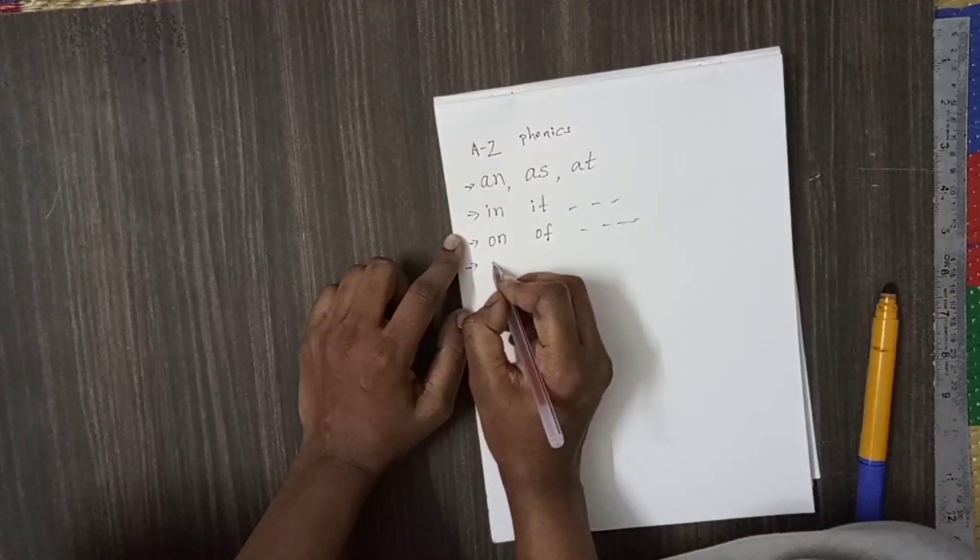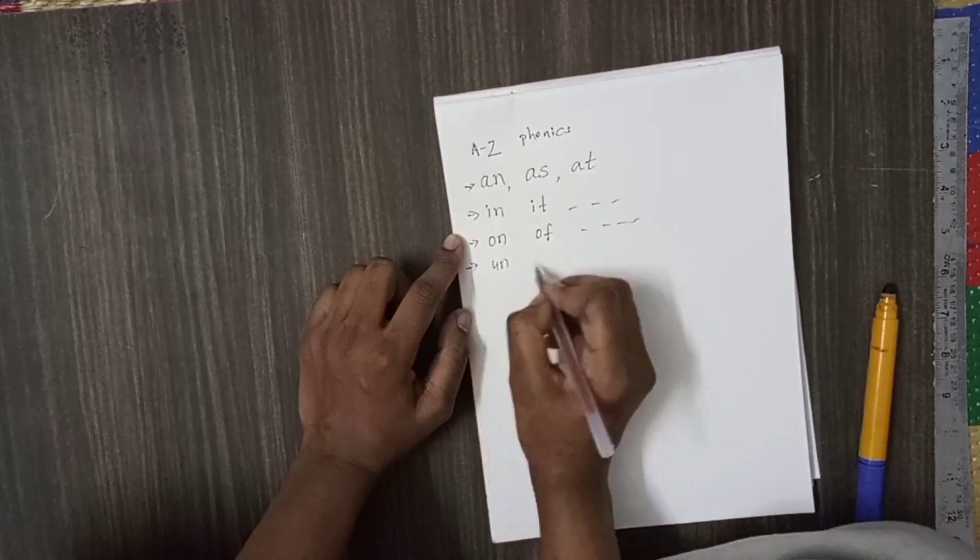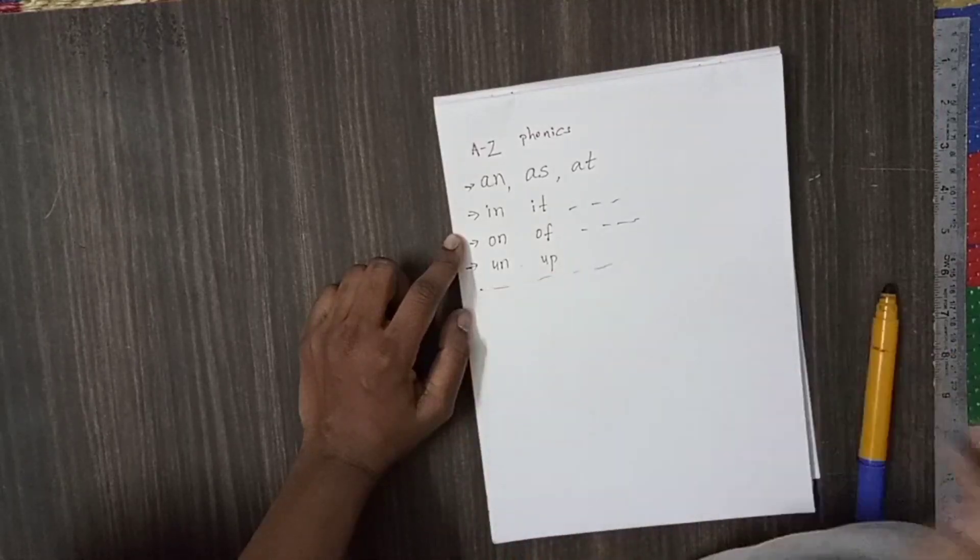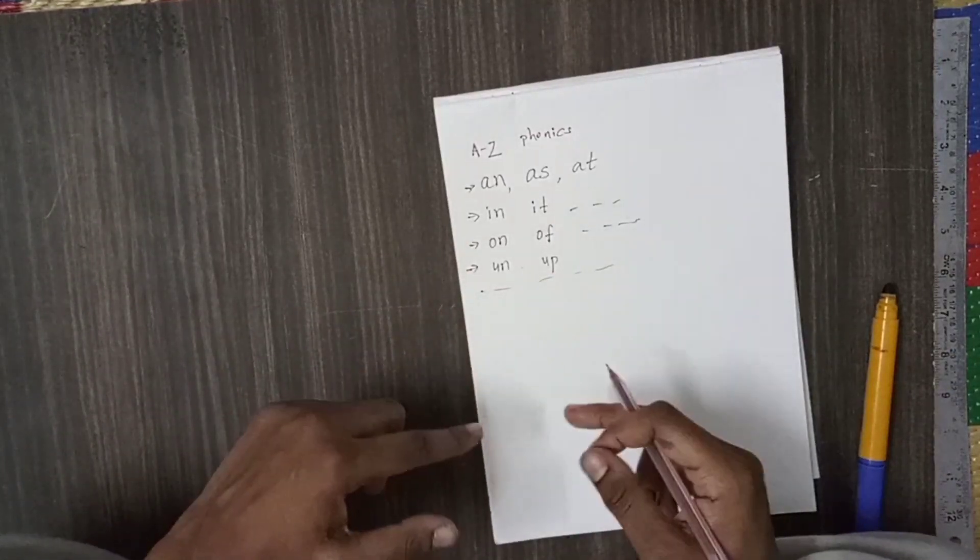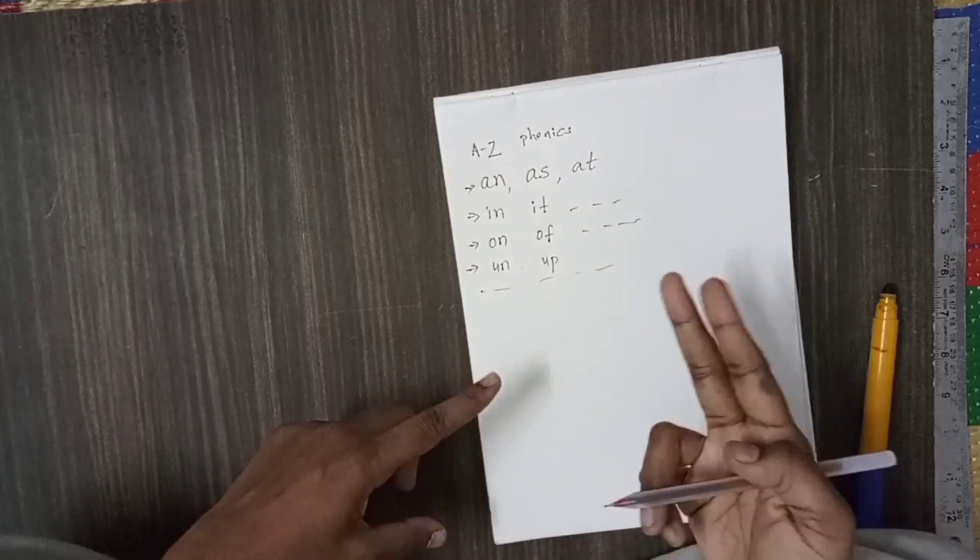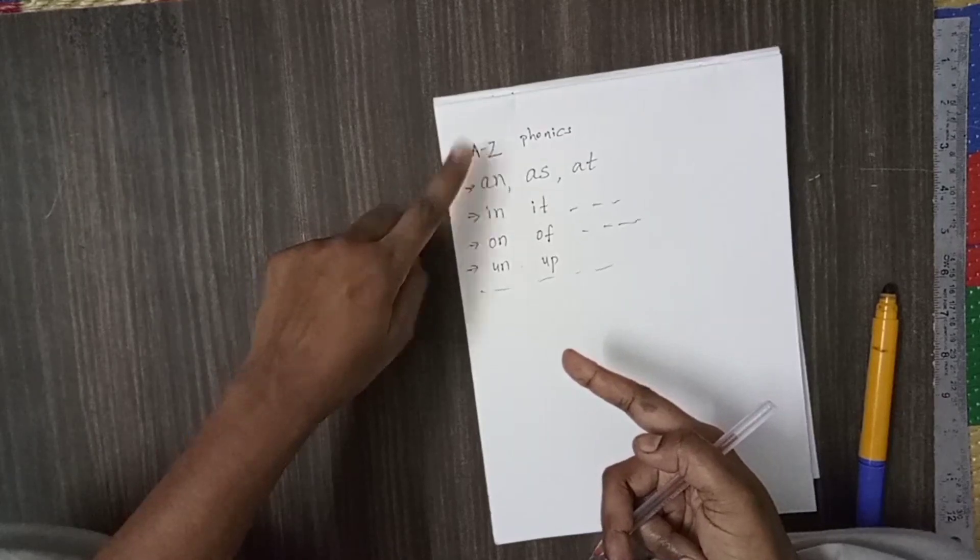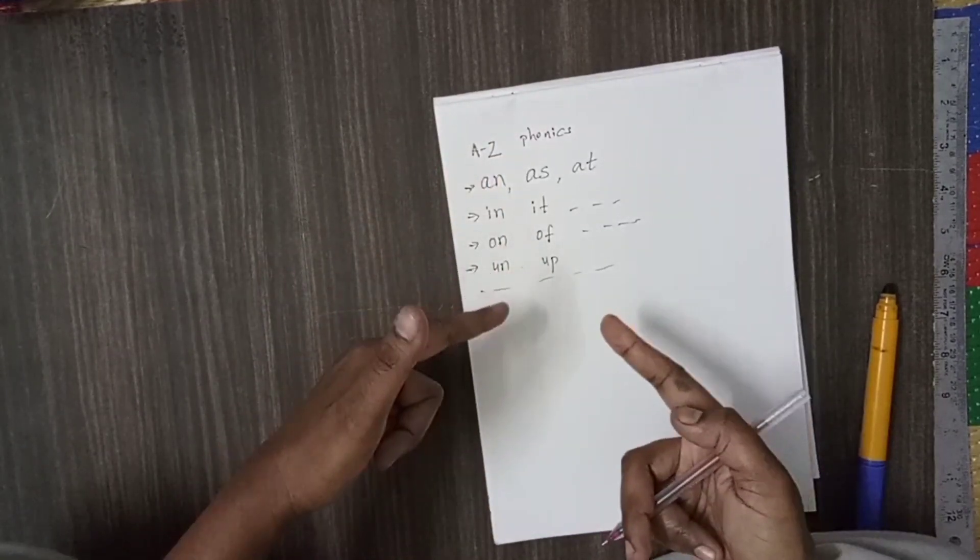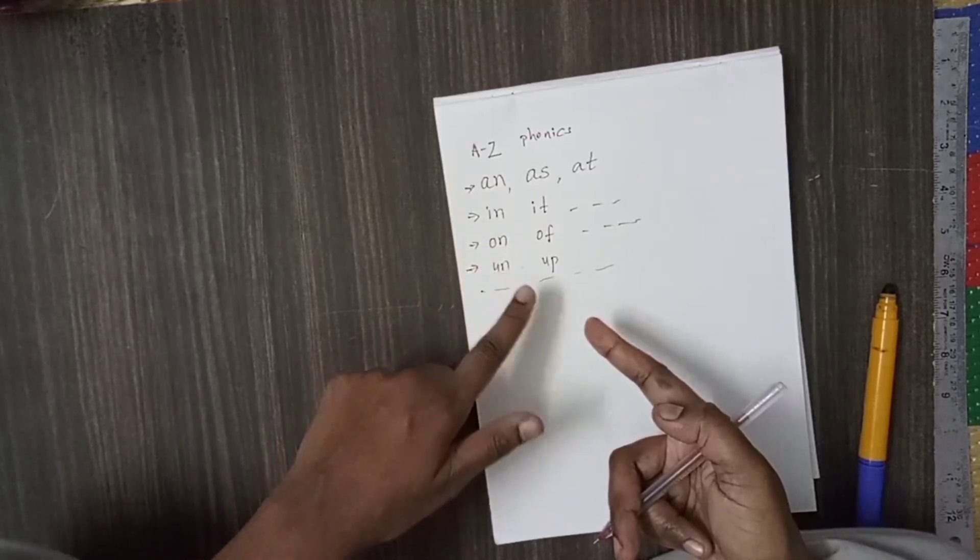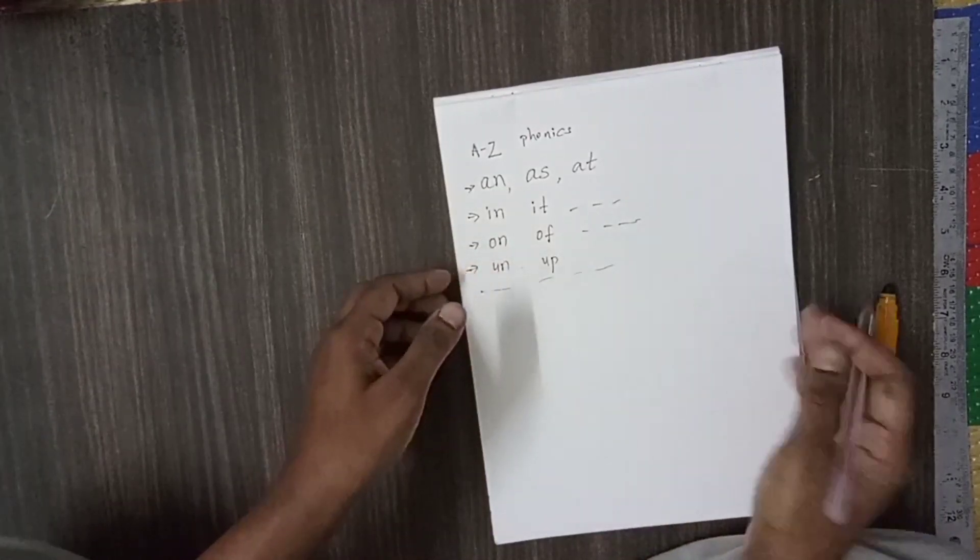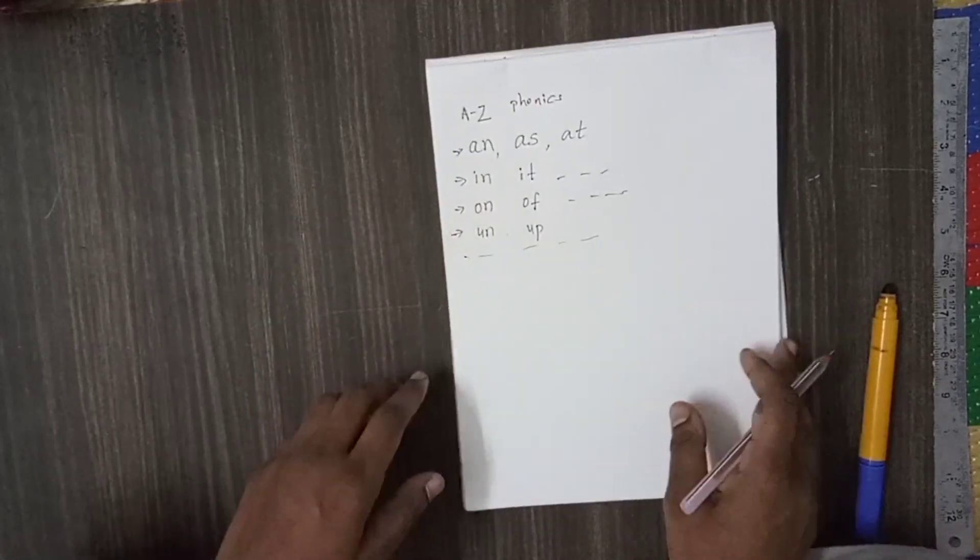Now next, they should be able to read U, N, UN, U, P, UP. Like this, they have to learn with each vowel sound. Then, the next step, we have to make them learn 3 letter words. Then we have to move to 3 letter words. That only we are going to see in this video.